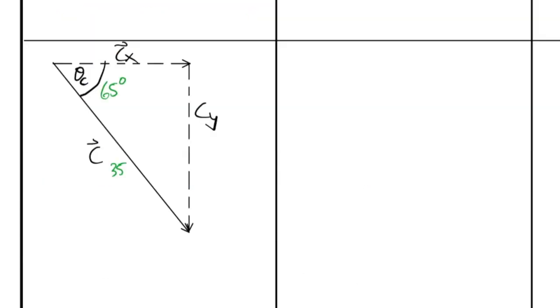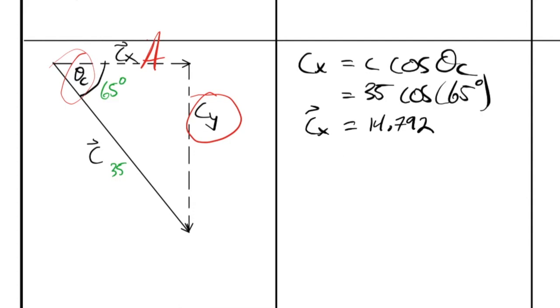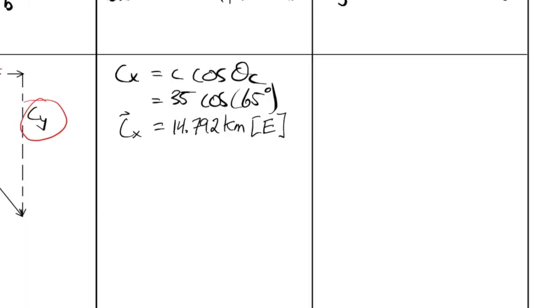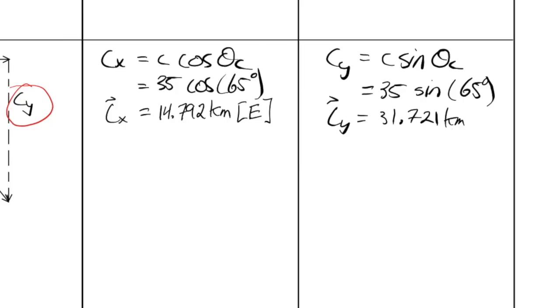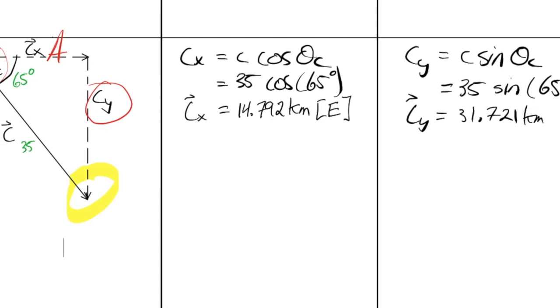Once again, taking a look at where theta C is, CY is the opposite. CX is the adjacent. CX is equal to C cos theta C. So that's 35 cos of 65 degrees. So that's 14.792 kilometers. And that's going east. CY is equal to C sin theta C. Sounds like a tongue twister, doesn't it? C sin theta C by the seashore. That's a terrible joke. And I say that every year, but I'm still going to say it. Substituting in. So that's 35 sin of 65. So that's a magnitude of 31.721 kilometers. And that is going south. And there we go. We got one more vector left.